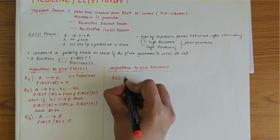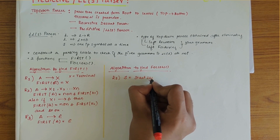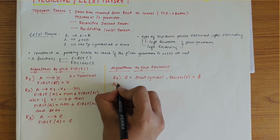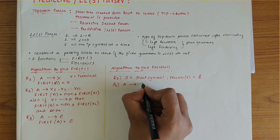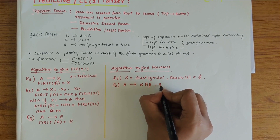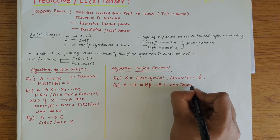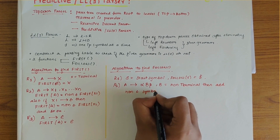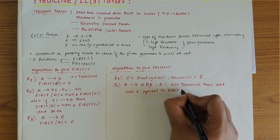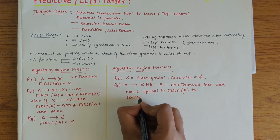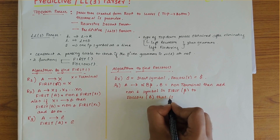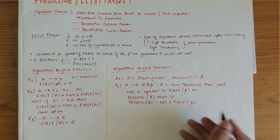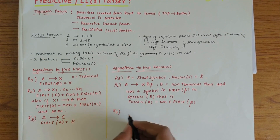Algorithm to find FOLLOW: Rule one states that if S is the start symbol, then FOLLOW of S is dollar. Rule two states that if A derives alpha B beta, where B is a non-terminal, then we need to add the non-epsilon symbols in FIRST of beta to FOLLOW of B. That is, FOLLOW of B is equal to non-epsilon FIRST of beta.